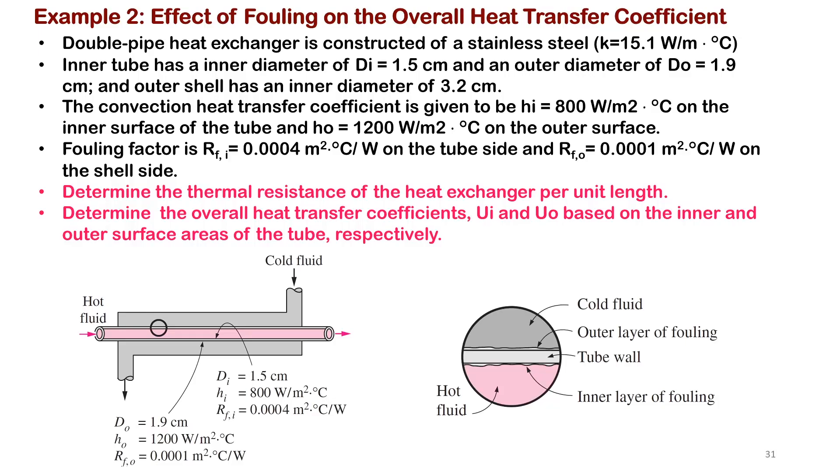Example 2 deals with the effect of fouling on overall heat transfer coefficient. In many industrial processes and practices, fouling is unavoidable, so we need to think about how to incorporate these effects in our calculations. We have a double-pipe heat exchanger.